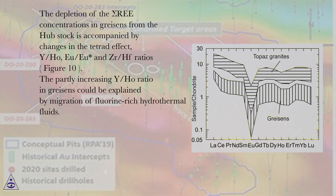The depletion of the sigma REE concentrations in greisens from the Hubstock is accompanied by changes in the tetrad effect, Y/Ho, Eu, Eu* and Zr-Hf ratios, figure 10.